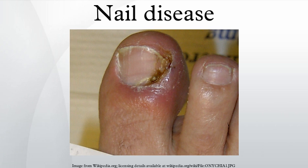Onychogryposis, also called ram's horn nail, is a thickening and increase in curvature of the nail. It is usually the result of injury to the matrix, may be partly hereditary, and can also occur from long-term neglect. It is most commonly seen in the great toe but may also appear in other toes and fingernails. An affected nail has many grooves and ridges, is brownish in color, and grows more quickly on one side than the other. The thick curved nail is difficult to cut and often remains untrimmed, exacerbating the problem.